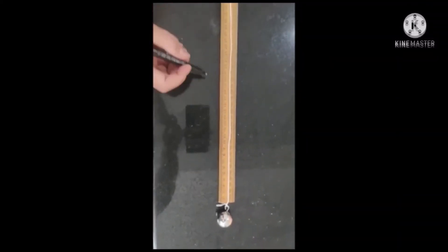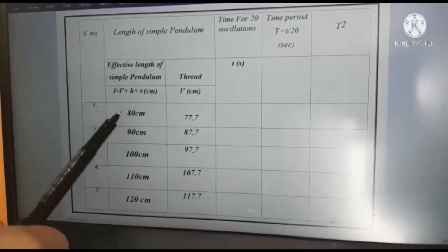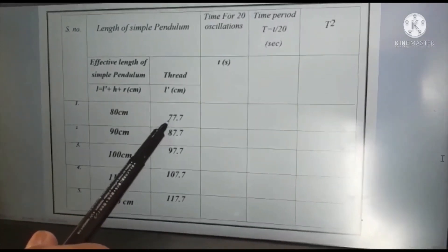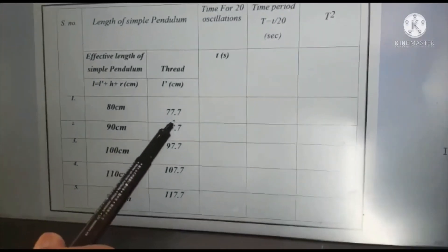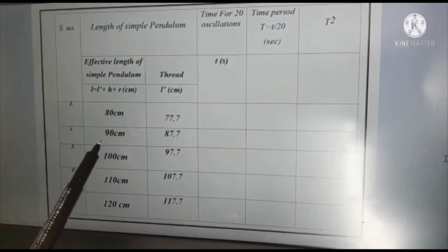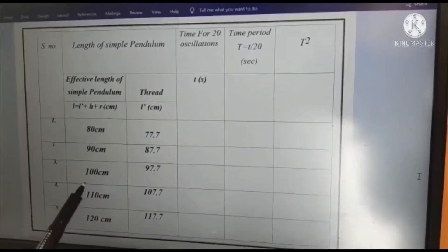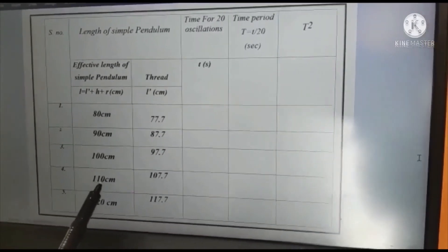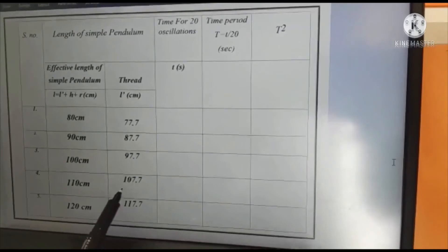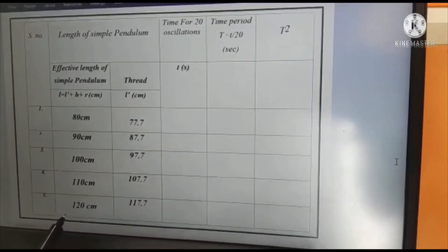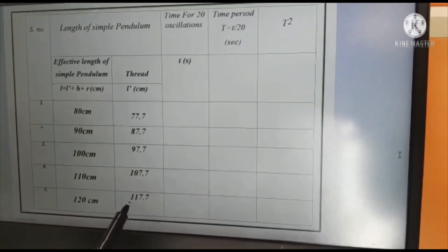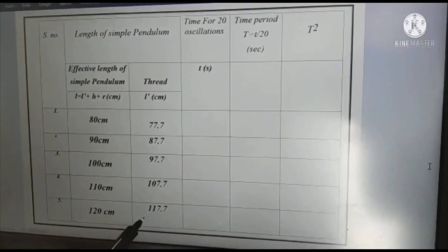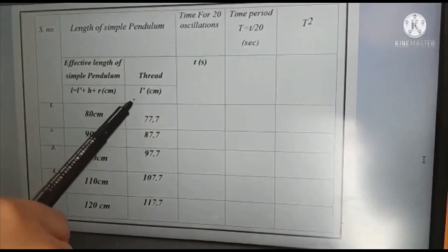Now we will mark L' on our thread. The effective length is 80 centimeter. L', that is excluding the length of H and R, is 77.7 centimeter. For 90 centimeter it is 87.7; for 100 centimeter it is 97.7; for 110 centimeter it is 107.7; and for 120 centimeter it is 117.7. So L' is the length of the thread excluding H and R. Now we will mark this L' on our string.